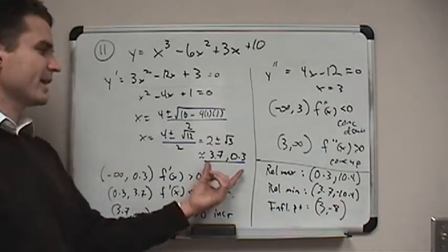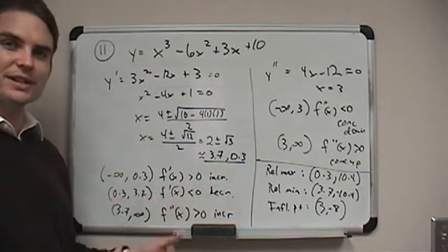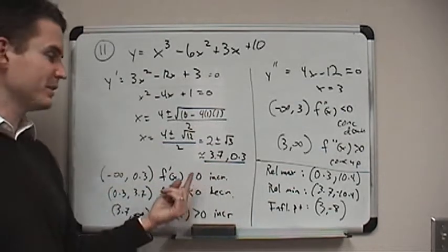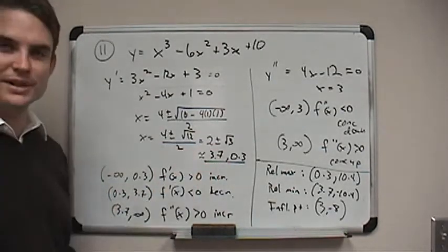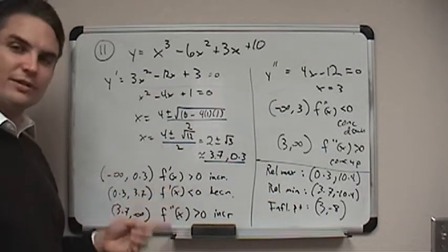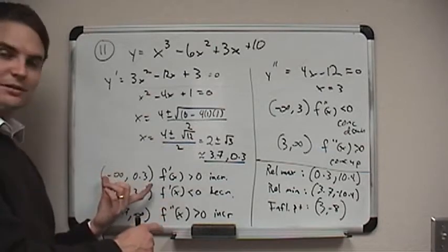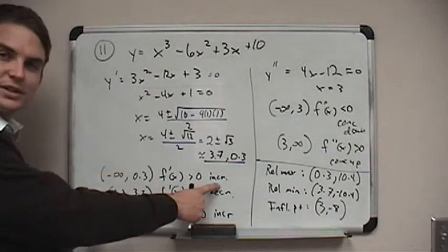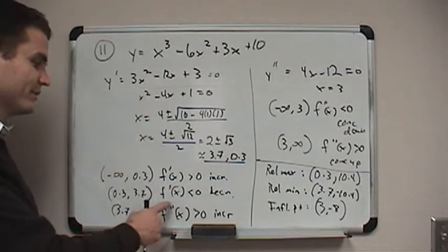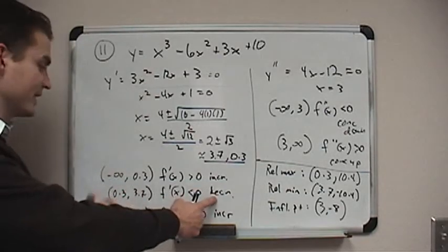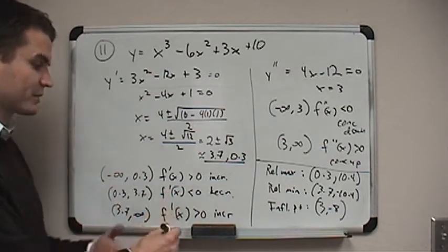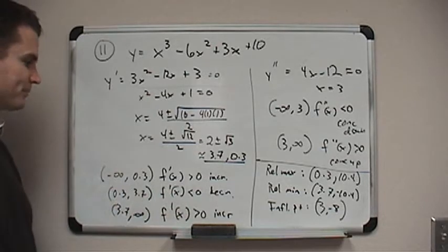So what that means is that I'm going to have three intervals to test and see if my function is increasing and decreasing. Everything to the left of 0.3, everything between these two critical numbers, and everything to the right of 3.7. So I made those three test intervals. I picked a number for x and plugged it into the first derivative, and here's what I found. On the first interval, the derivative is positive, so the function is increasing. On the second interval, I picked a point in here like 1 for x, put that into the derivative, and I found that the derivative is negative, so the function is decreasing in that interval. And then finally, to the right of 3.7, oops, that should just be the first derivative. The first derivative is positive, so it's increasing again.